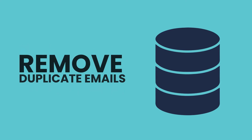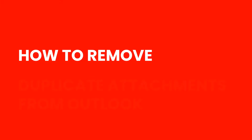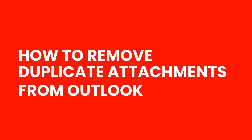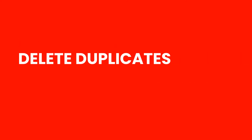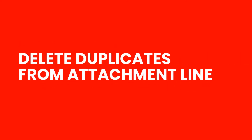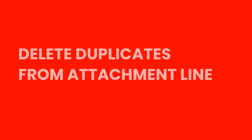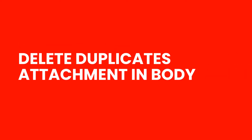In order to manage mailbox size and improve Outlook performance, there is a need to remove duplicate emails along with their attachments. Users can either delete duplicates from the attachment line, or delete duplicate attachments from the mail body.